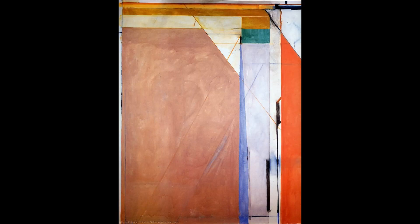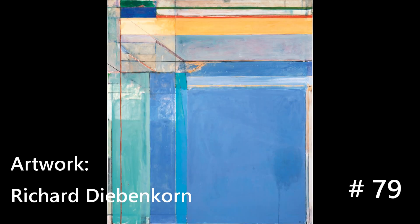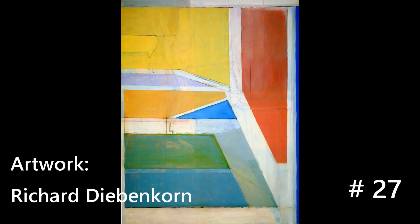Richard Diebenkorn is a famous American West Coast painter who lived from 1922 until 1993. Being a lover of abstract painting, I fell in love with his work. This painting is known as Ocean Park series 27.